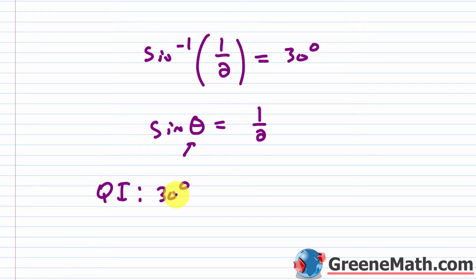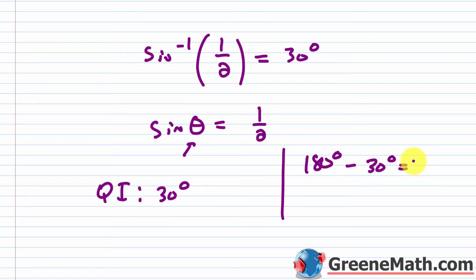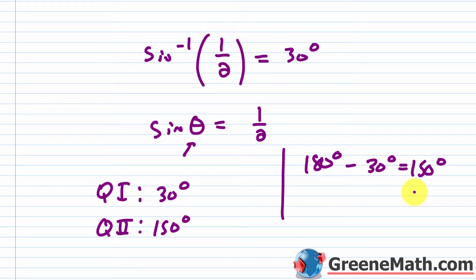The quadrant 1 answer is 30 degrees. It repeats every 360 degrees in either direction. For quadrant 2, I need an angle with a 30-degree reference angle: 180 minus 30 equals 150 degrees. So in quadrant 2, I get 150 degrees. You could also use special triangles — there are many ways to think about this.